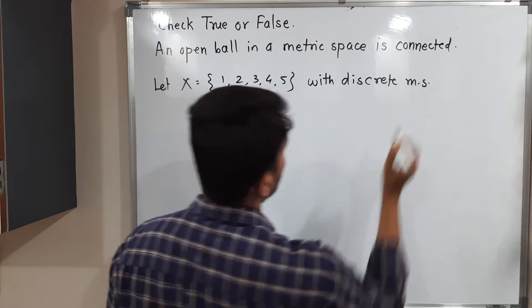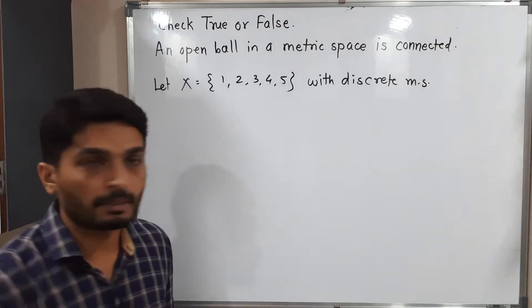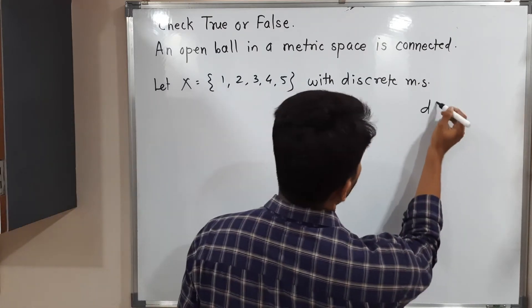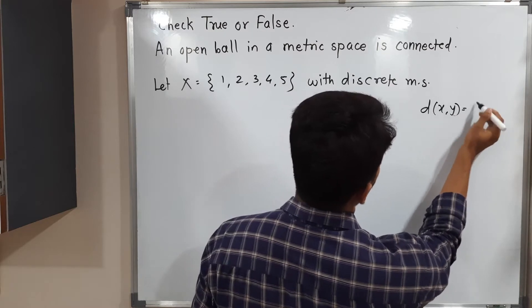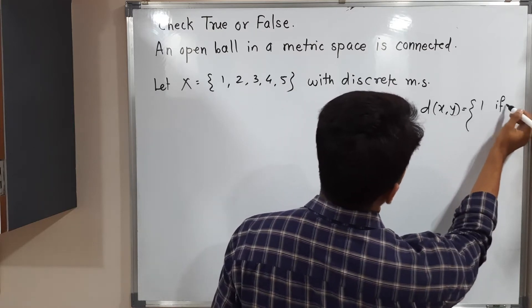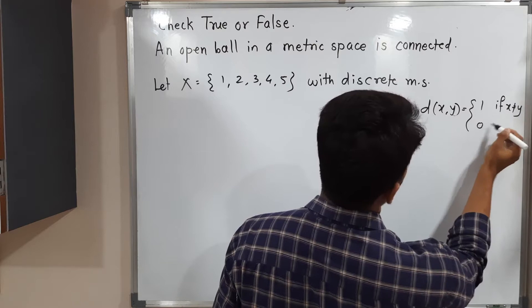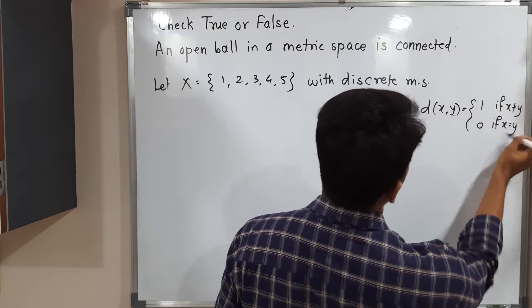The metric space I have considered discrete. So you are familiar with discrete metric space. It is defined as d(x,y) is equal to 1 if x is not equal to y and it is equal to 0 if x is equal to y.